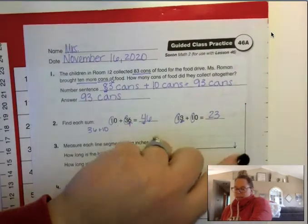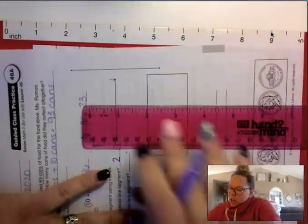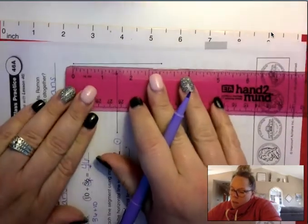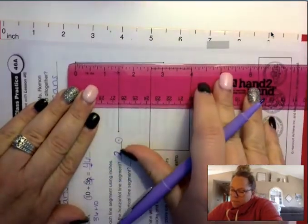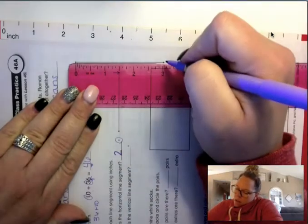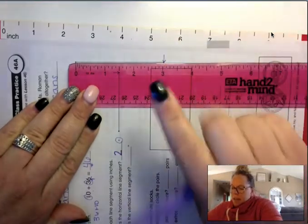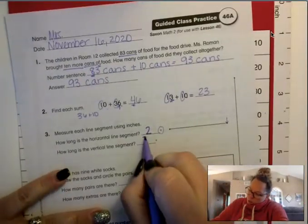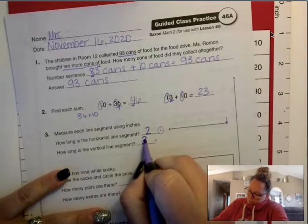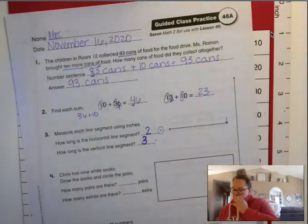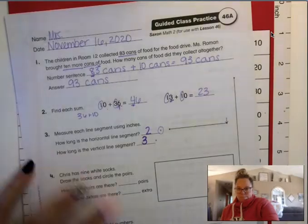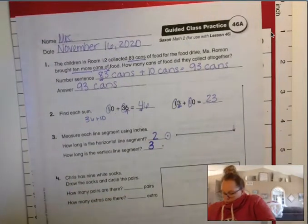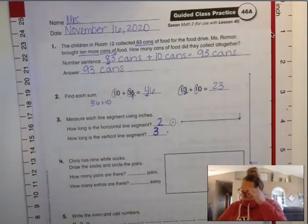Now my vertical line segment is here on the side. So I'm going to turn it to the side because it's easier for me to measure if it's in front of me. I'm going to start at 0 again, and I'm going to end where the other point is for my line segment. And that is at the 3. So my vertical line segment is 3 inches. And then you can put your ruler to the side because you don't need that.